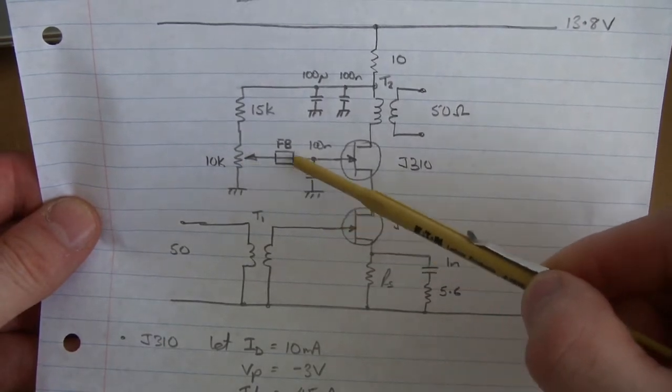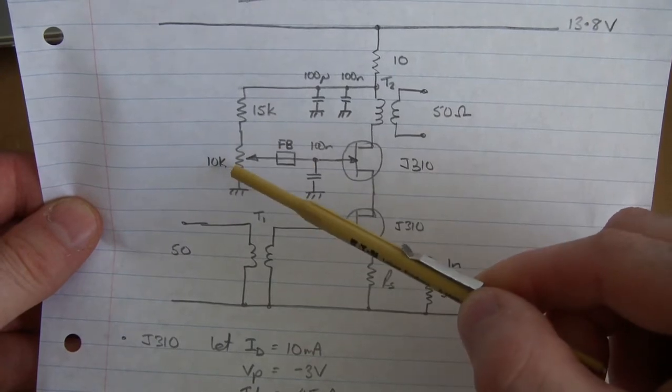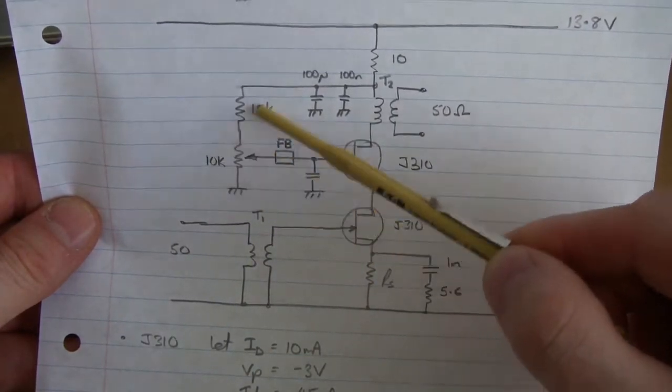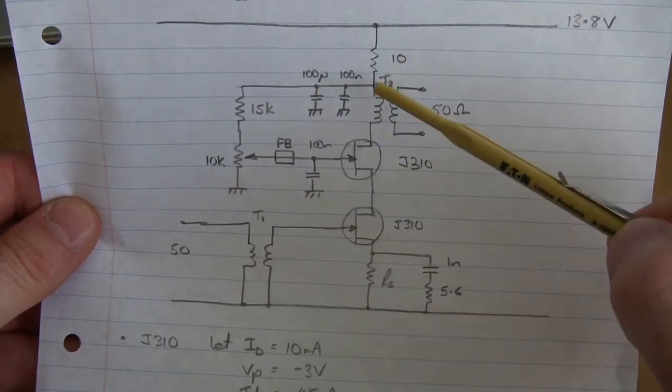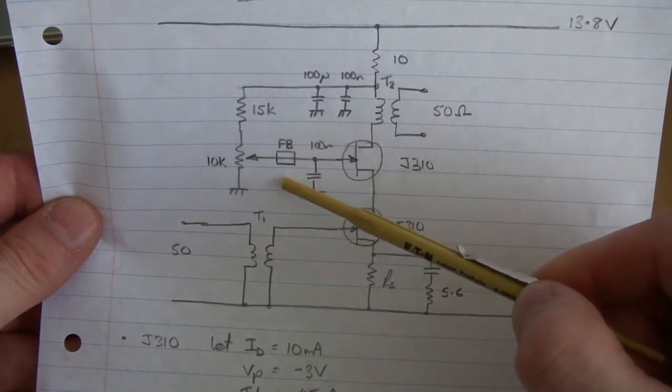That's a 10K pot. So the voltage can go effectively from 0 through to 10K over 15, which we'll look at before over 25, times that voltage there to give us that gain variation. There's a ferrite bead in there.